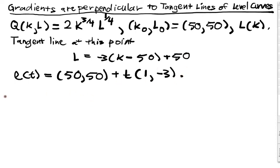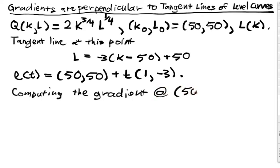Well, let's also compute the gradient at this point, 50-50. So this is the gradient of q at that point. The gradient of q at 50-50 is equal to, of course, dq dk evaluated at 50-50.